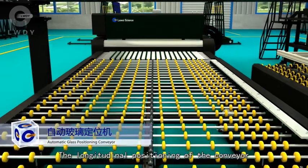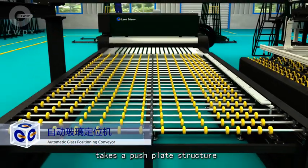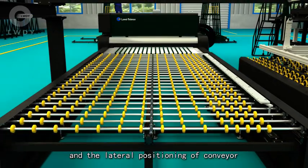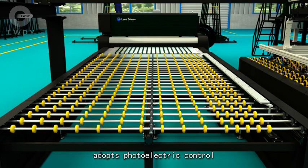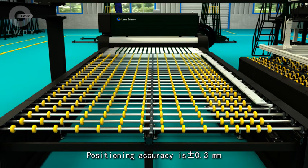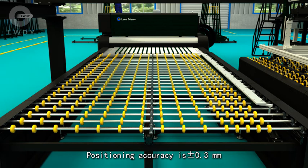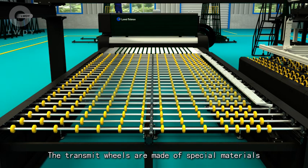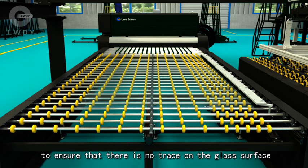The longitudinal positioning of the conveyor takes a push plate structure, and the lateral positioning of conveyor adopts photoelectric control. Positioning accuracy is plus or minus 0.3 mm. The transmitted wheels are made of special materials to ensure that there is no trace on the glass surface.